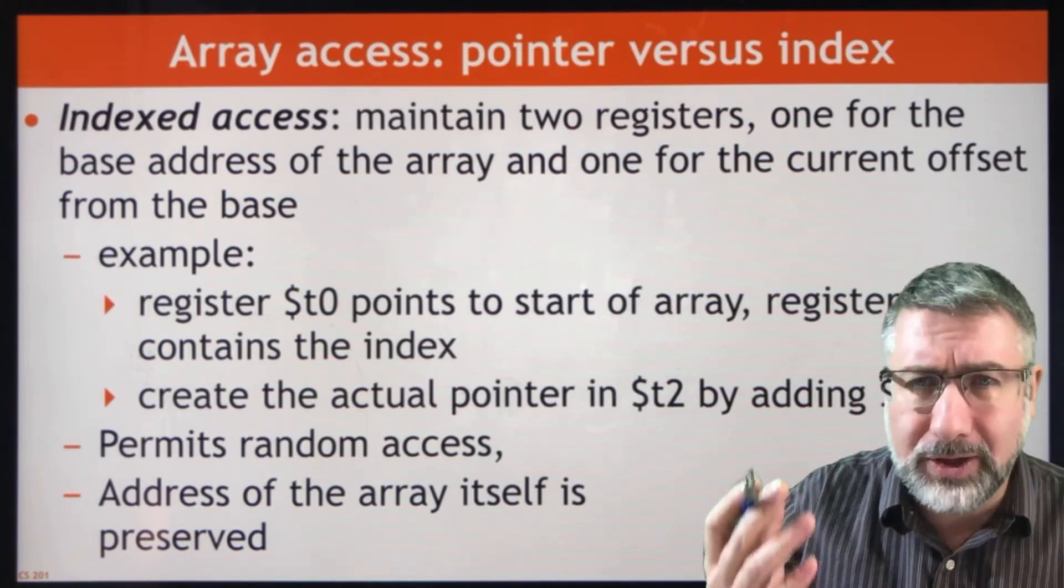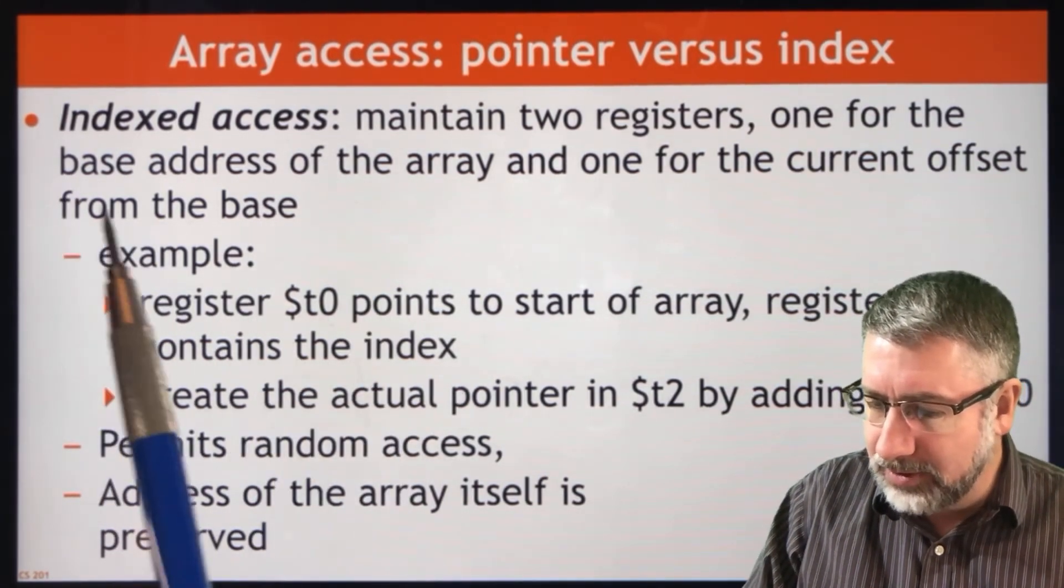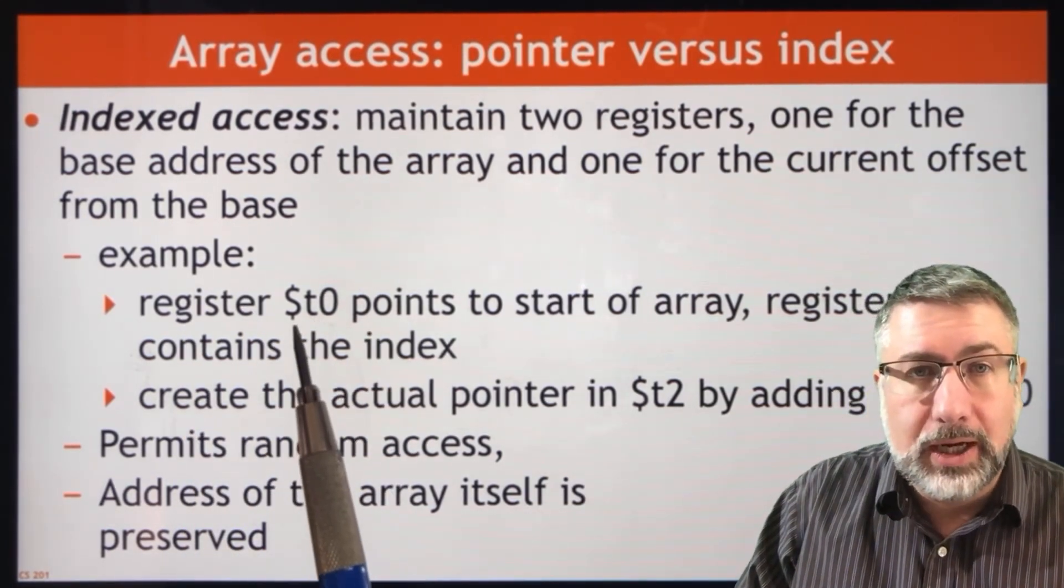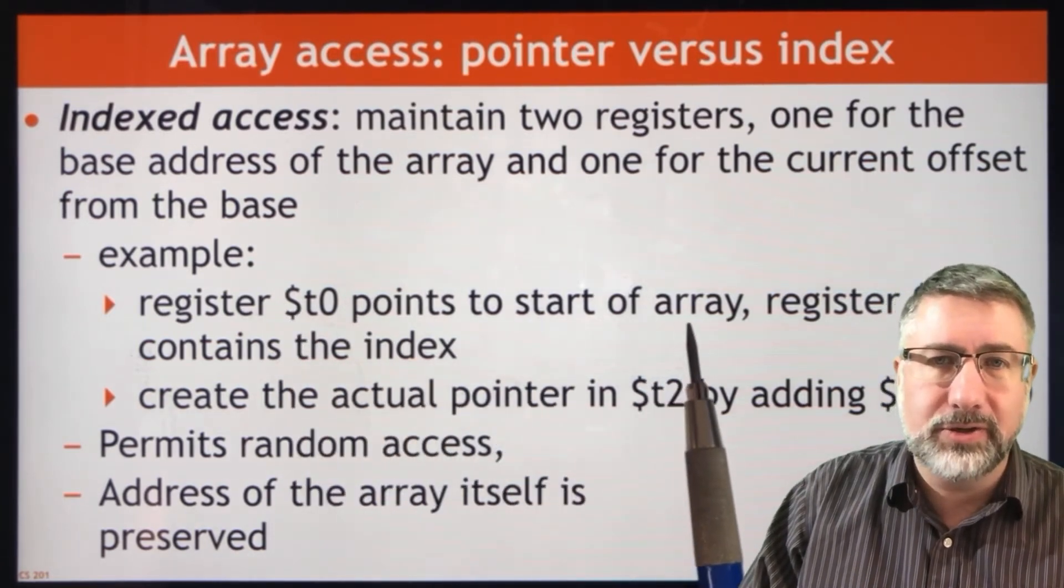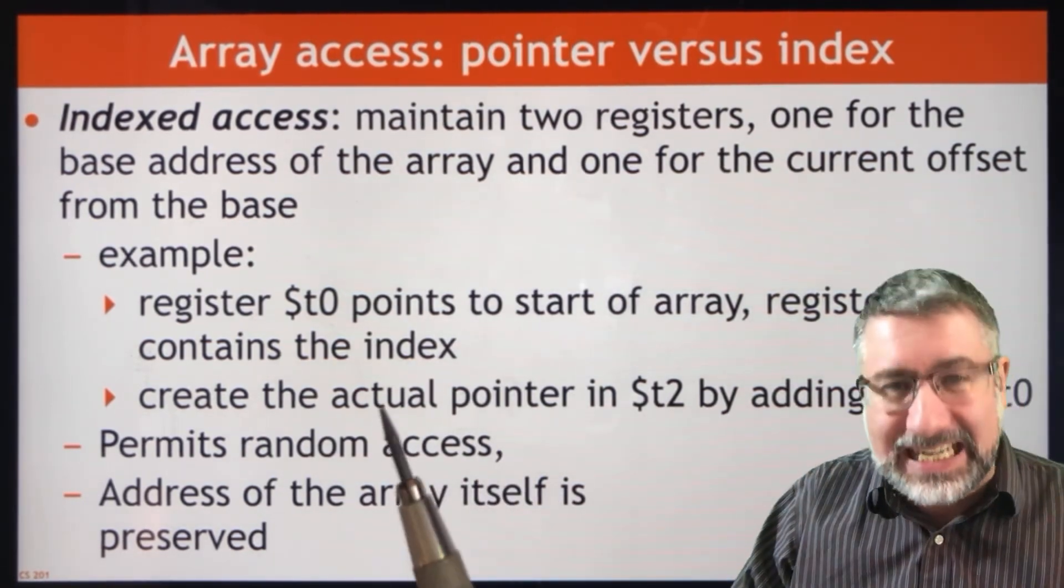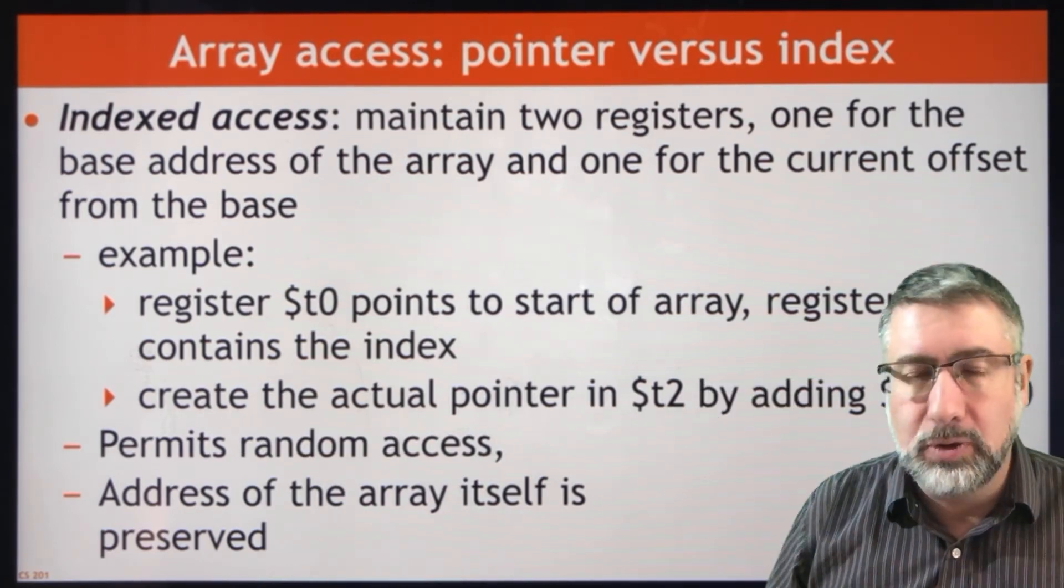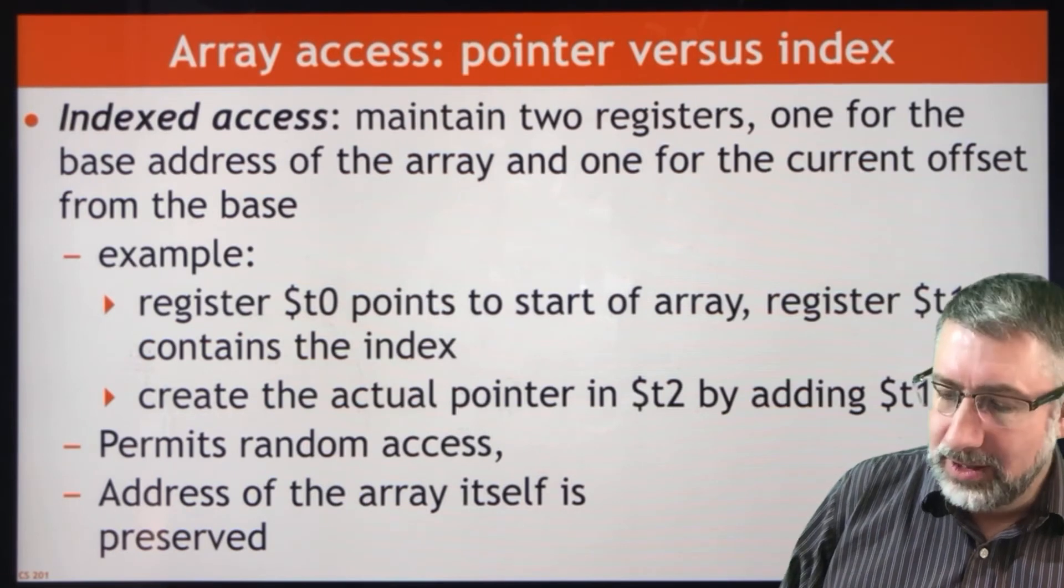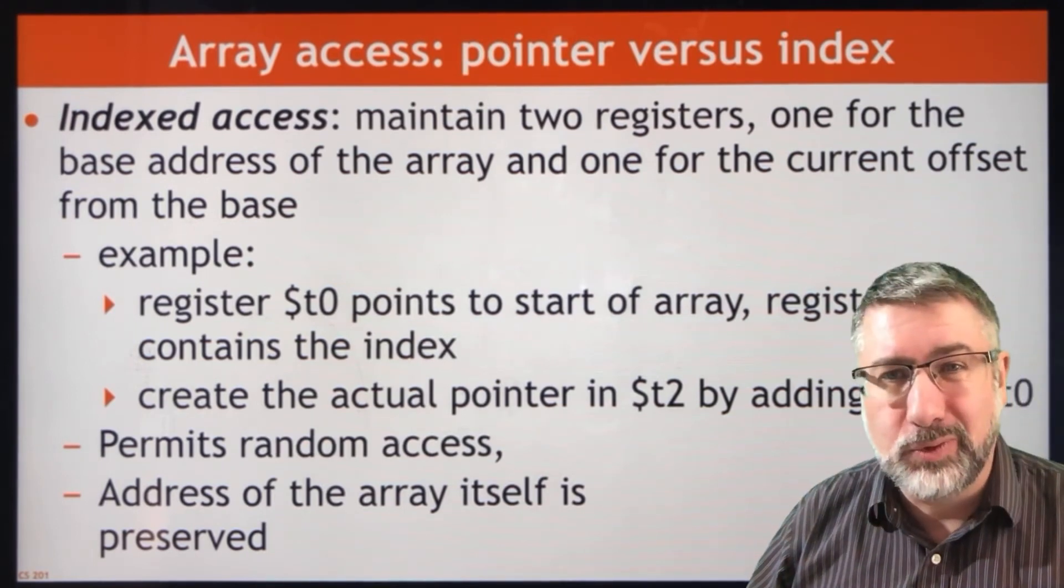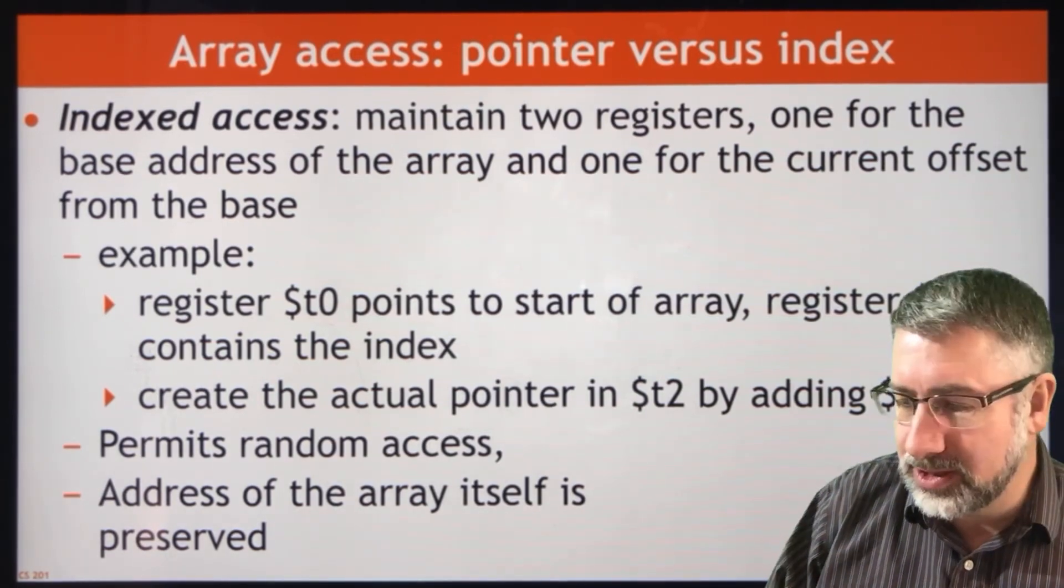Maybe we'll use that as a review question before the exam. Okay, so you're going to maintain two registers. The one has the base address, one has the offset, and then in this case, in this example that we're going to do, register T0 will point to the start of the array, and we're not going to change T0. And then register T1 is going to contain the index. That's going to be T0 plus four times T1 will get you to the location that you're interested in by adding these two together. T0 plus T1. Now you could maintain four times T1 in the index, and that would be fine as well. The address of the array itself then is preserved, and so we can see how this stuff works.